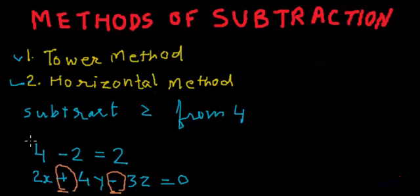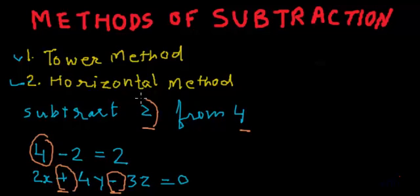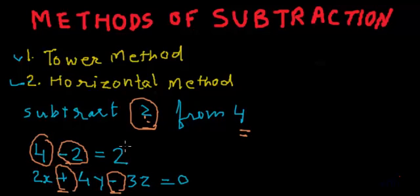In normal mathematics, if we have to subtract two from four, we write four and then write negative of two. Here two is a positive number, and to subtract it from four we write negative two. So this is the way we subtract normally when we deal with numbers.